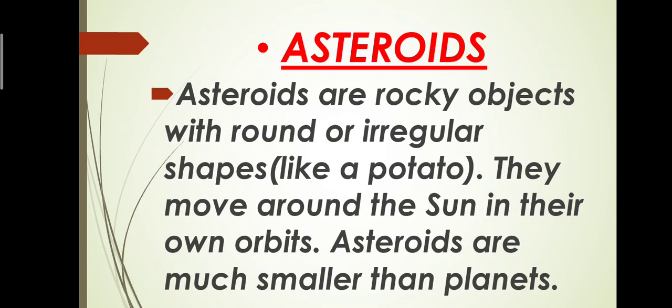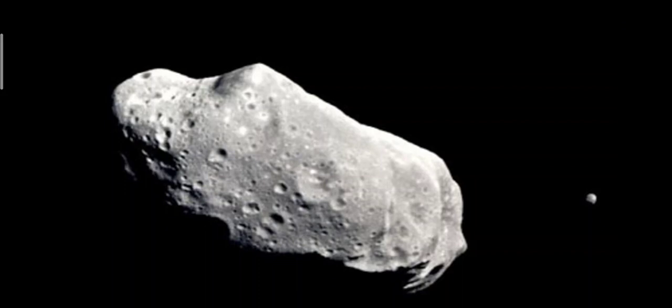The asteroids move around the sun in their own orbit like small planets but these asteroids are much smaller than other planets. Now let me show you the simple diagram of asteroid. This is the simple diagram, as you can see it is like a rocky object and it is shaped like a potato.